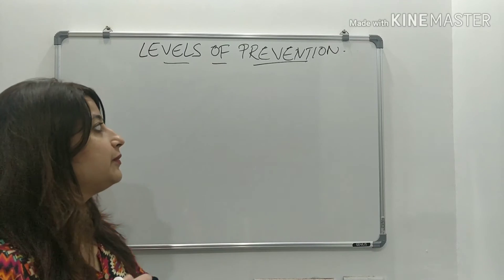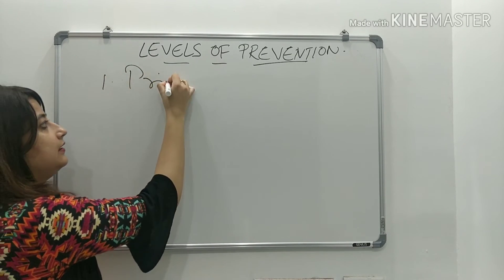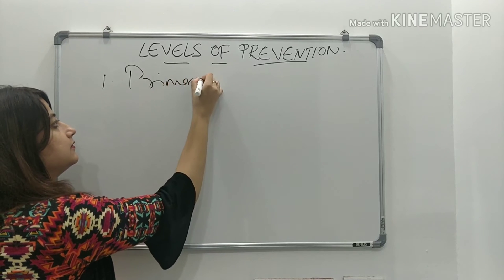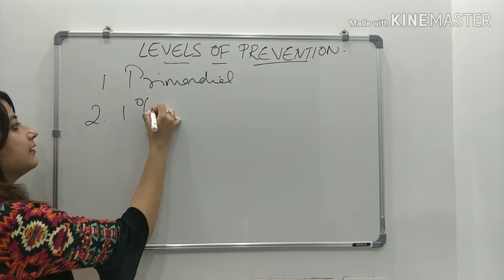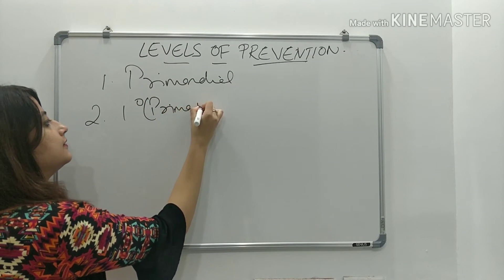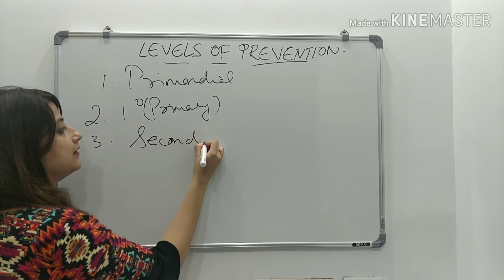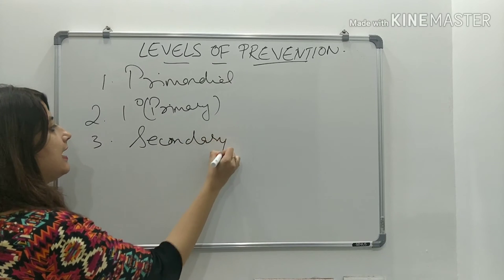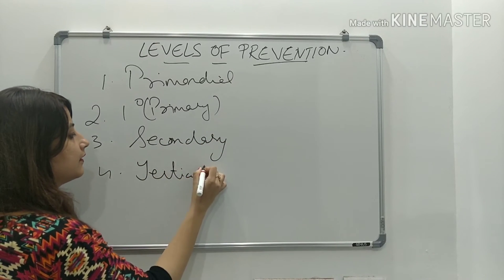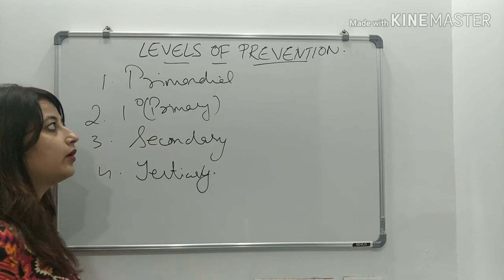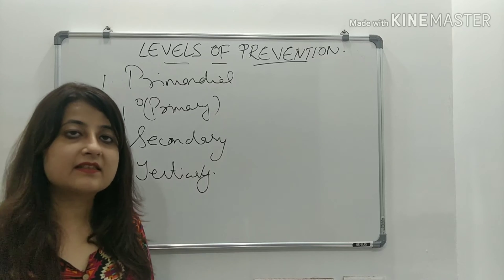The levels of prevention are basically four. The first one is primordial, the second one is primary, the third one is secondary, and the fourth one is tertiary. Now, what is each level of this prevention? What do you understand by this?